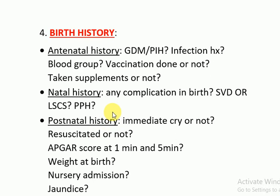Now the most important steps that make pediatric history different from adult history: that is the birth history. You have to ask the antenatal, natal, and postnatal history in the birth history.